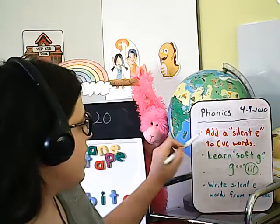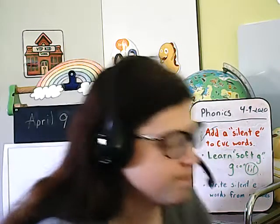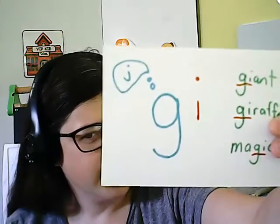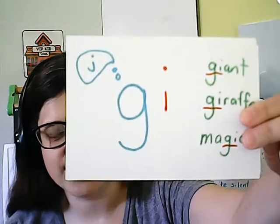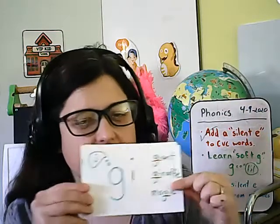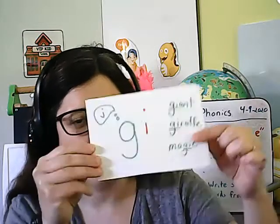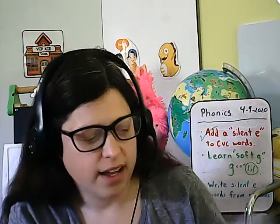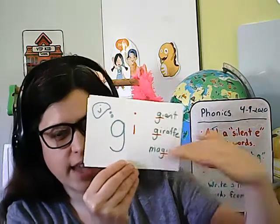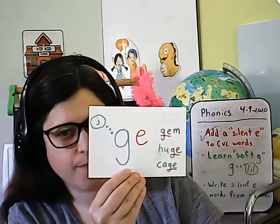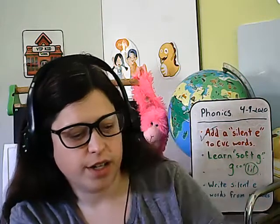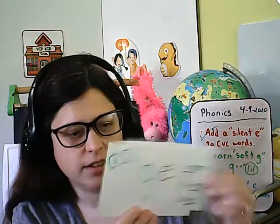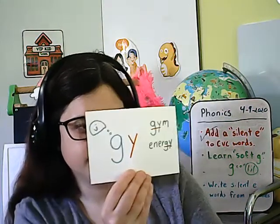Let's check this off and talk about something else for a minute. This is what I like to call soft G. Soft G is when a G says the J sound — like J instead of G. It does that when it goes before an E, I, or Y.